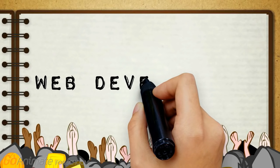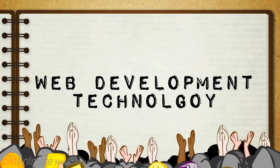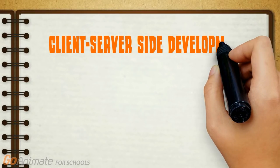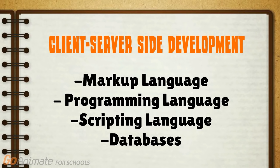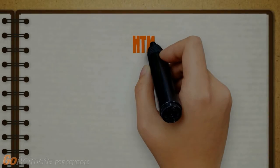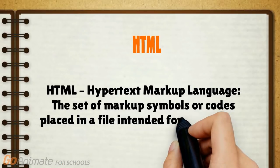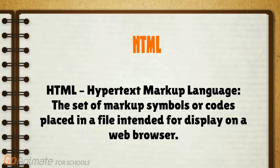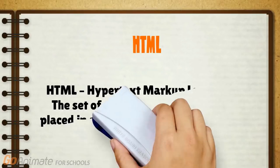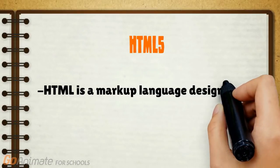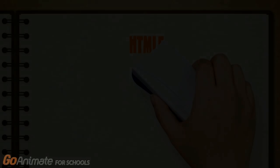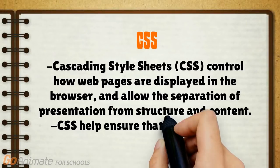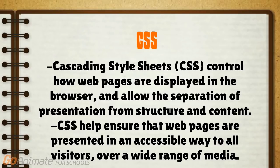Now it's a good time to learn about web development technology. Client and server side web development uses markup, programming, scripting languages, and databases along with other technologies. Common client-side technologies include: HTML (hypertext markup language), the set of markup symbols or codes placed in a file intended for display on a web browser. HTML is designed to structure information for presentation as web pages. HTML5 is the current version and has changed the web world. CSS (cascading style sheets) controls how web pages are displayed in the browser and allows the separation of presentation from structure and content.